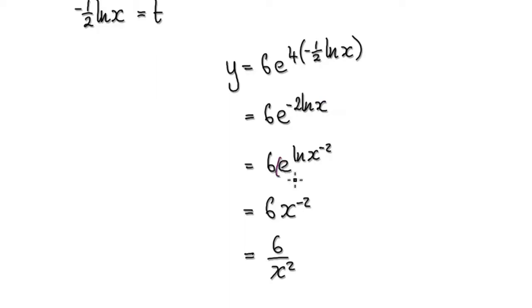And then now, whenever you see e to the natural log, then it will simplify to this, and then now this block multiplying this block, this is 1 over x squared, so that will then give you this.